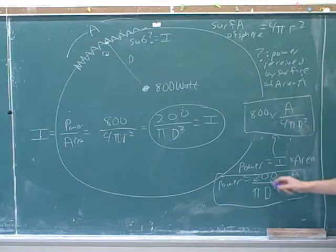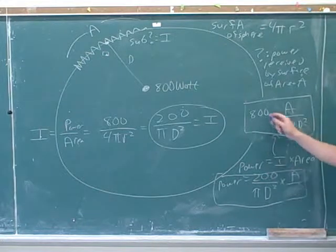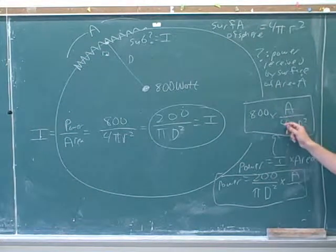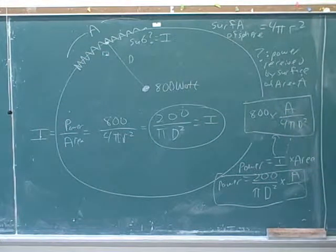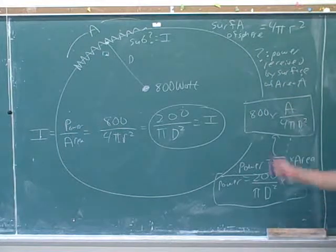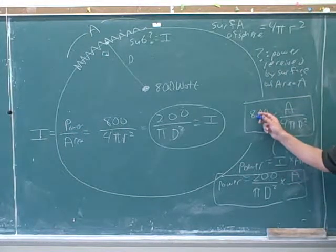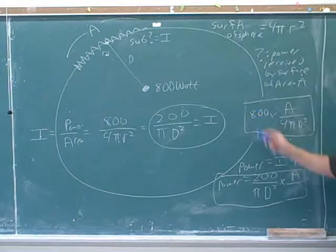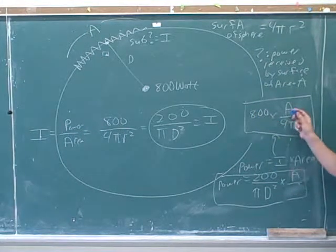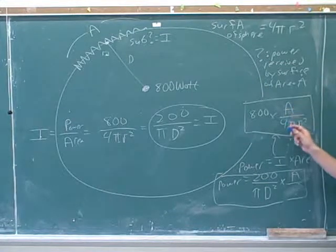These are the same thing. Instead of saying 200, I can say 800 divided by 4. So this shows us: what's the power on that little sliver? Well, the total power on the entire sphere is 800 watts, and this is the fraction of the sphere that the sliver accounts for.